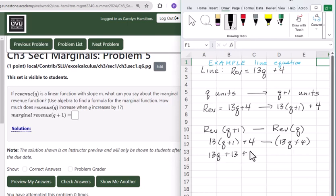13q plus 13 plus 4, distribute, take away 13q, take away 4. The 13qs cancel, the 4s cancel, 13.